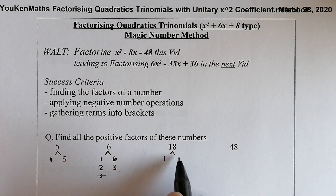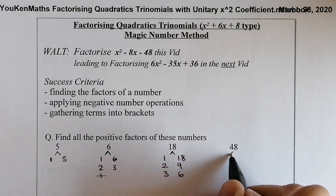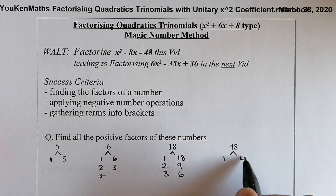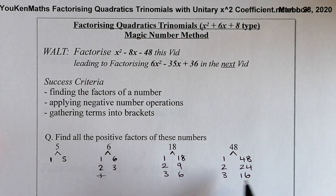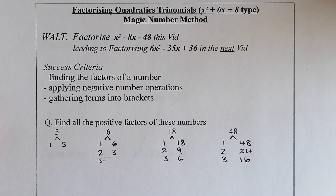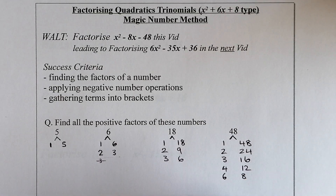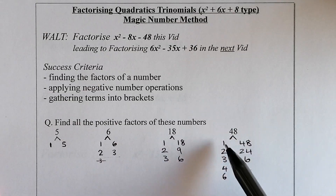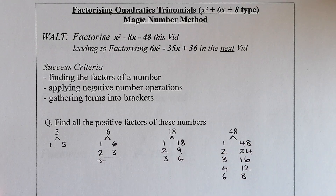For 18: 1 and 18, 2 and 9, 3 and 6 — 4 and 5 won't work — then back to 6. For 48: 1 and 48, 2 and 24, 3 and 16, 4 and 12, 6 and 8 — 5 and 7 won't work. So the factors of 48 are 1, 2, 3, 4, 6, 8, 12, 16, 24, 48. When using the magic number method, I'll be using these in pairs.